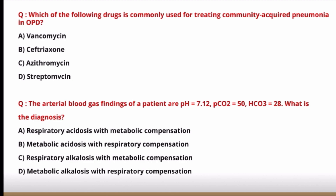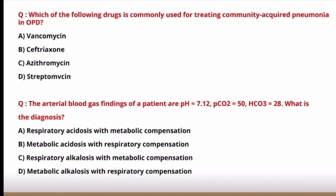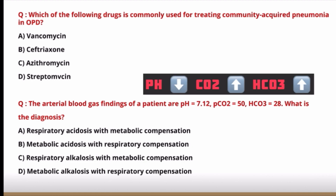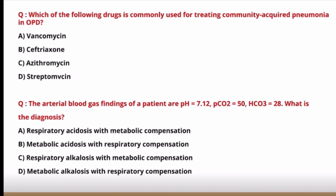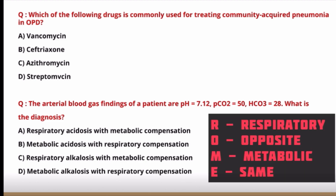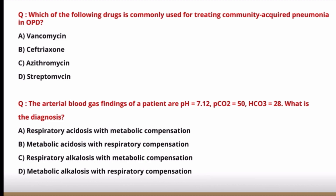Last question: ABG findings are pH 7.12, pCO2 50, bicarbonate 28. What is the diagnosis? First look at pH — it is reduced (normal 7.35–7.45), so it is an acidosis; alkalosis options are ruled out. pCO2 is increased and bicarbonate is also increased — both are opposite to the direction of pH change. Using the mnemonic ROME, opposite means a respiratory process. This is respiratory acidosis with metabolic compensation.